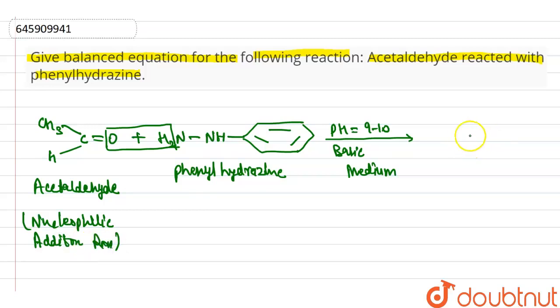Now, our product is CH3-CH=N-NH connected to a benzene ring. Water is removed, and this compound is named acetaldehyde phenylhydrazine.